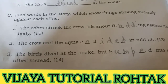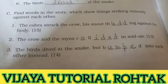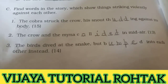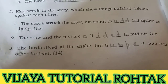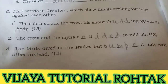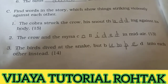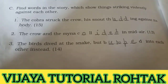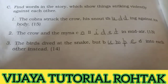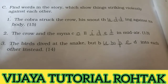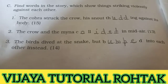Second: 'The crow and the myna collided in mid-air.' Collided means to crash into each other — 'takrana.' When they swooped at the cobra, the two birds crashed into each other. Third: 'The birds dived at the snake but bumped into each other instead.' Bumped — B-U-M-P-E-D — means the crow and myna hit each other while trying to attack the snake.